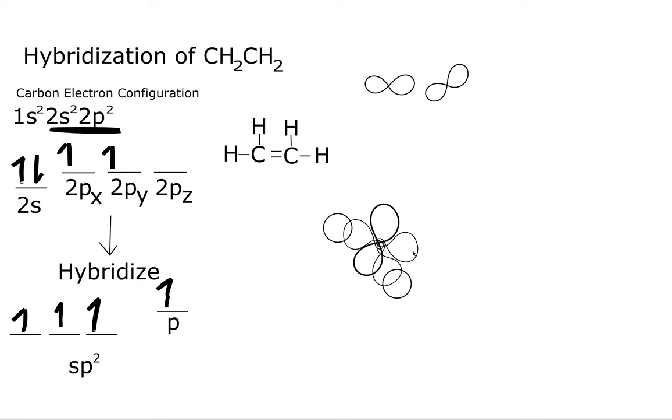Now, this sp2 orbital is going to connect with this carbon right here to make a sigma bond. And remember, sigma bonds are just overlapping once. So like these two right here will just overlap once. That's a sigma. However, a pi bond is when they overlap twice.